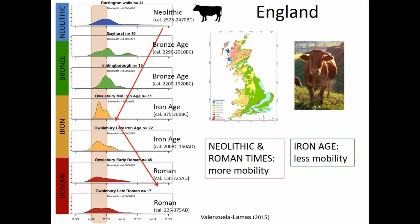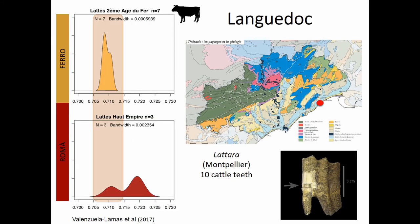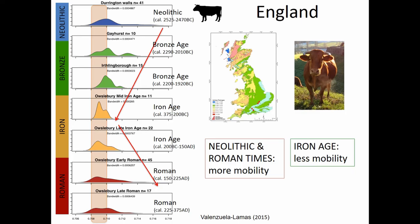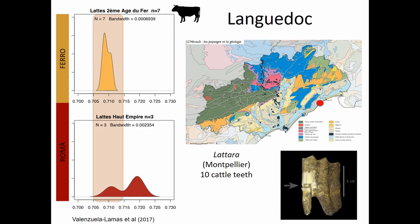Then in Roman times, we find much more variability. This is correlating with the patterns I described earlier. The same thing is happening here in Andalucia. We did a pilot study with only 17 teeth. Seven teeth from the Iron Age fall into the local signature. Of the Roman period teeth, only one falls in the local signature, and two were coming from somewhere else.